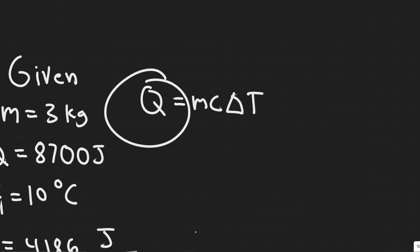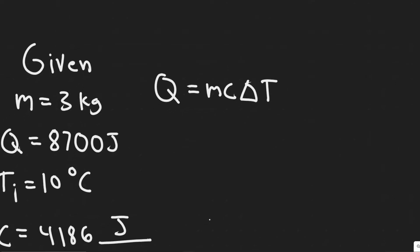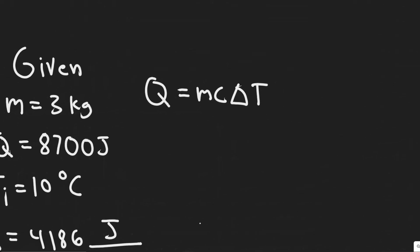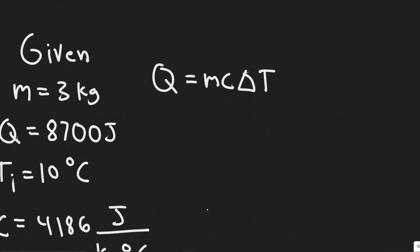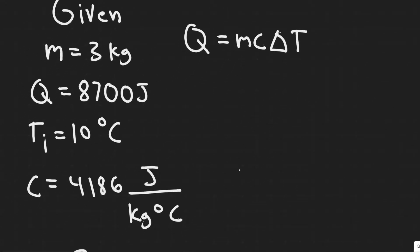So Q is the amount of energy you're adding. So in this case, 8,700 joules of heat. And so that's going to be equal to M, which is the mass, times C, which is a constant called the specific heat capacity. And it's basically a different value depending on the substance.